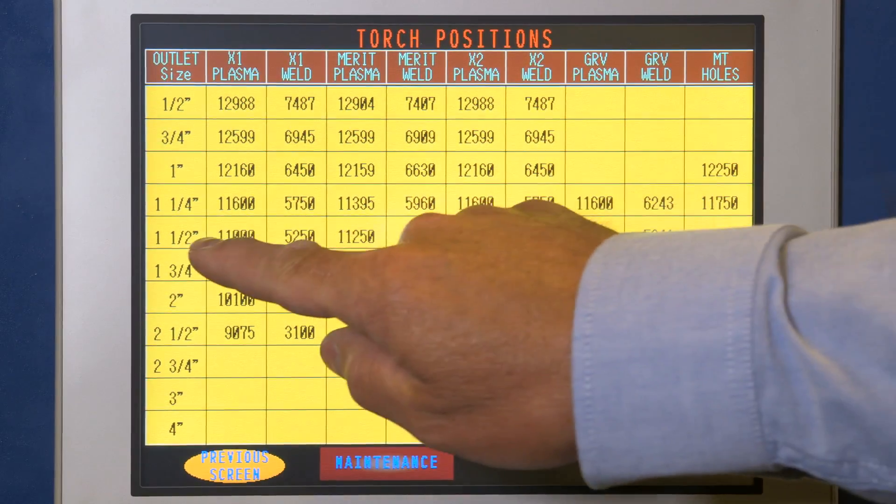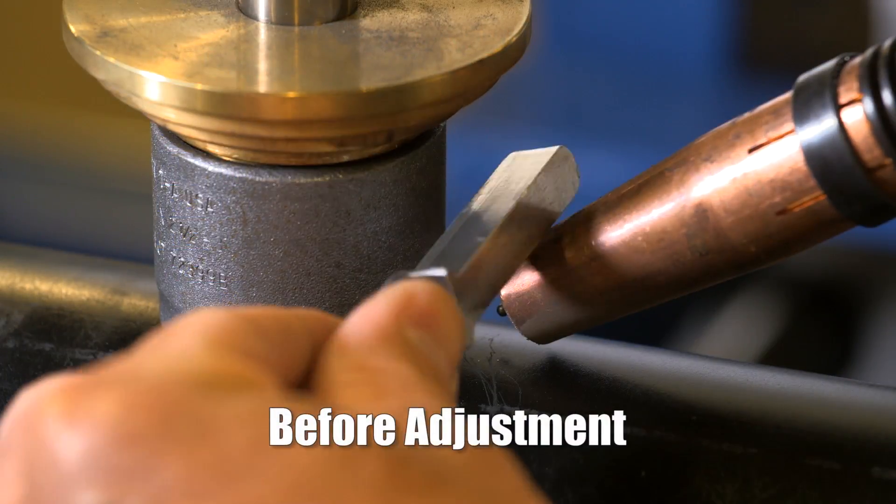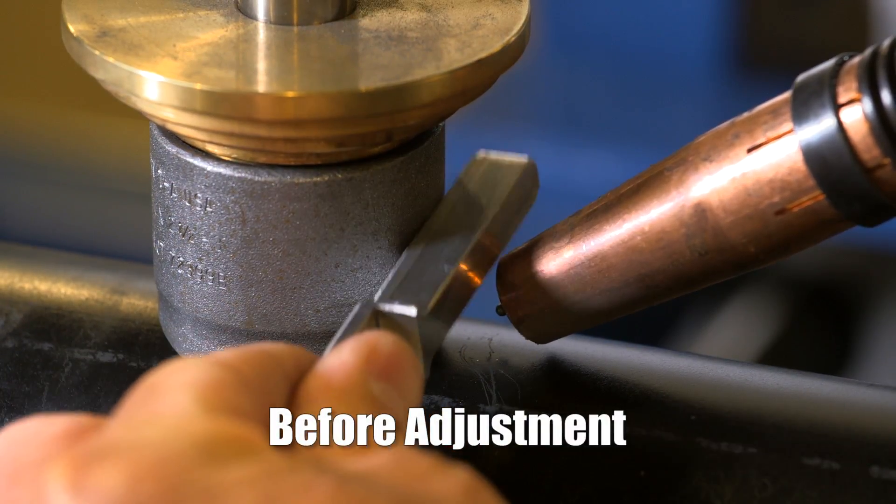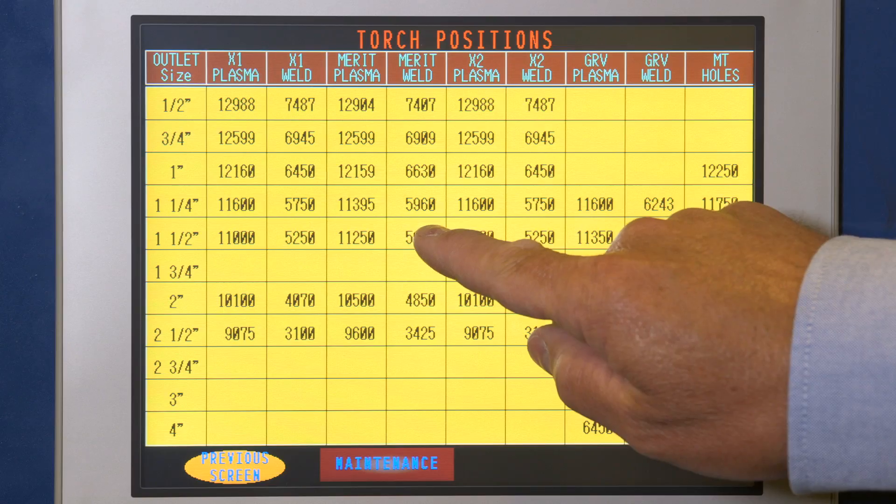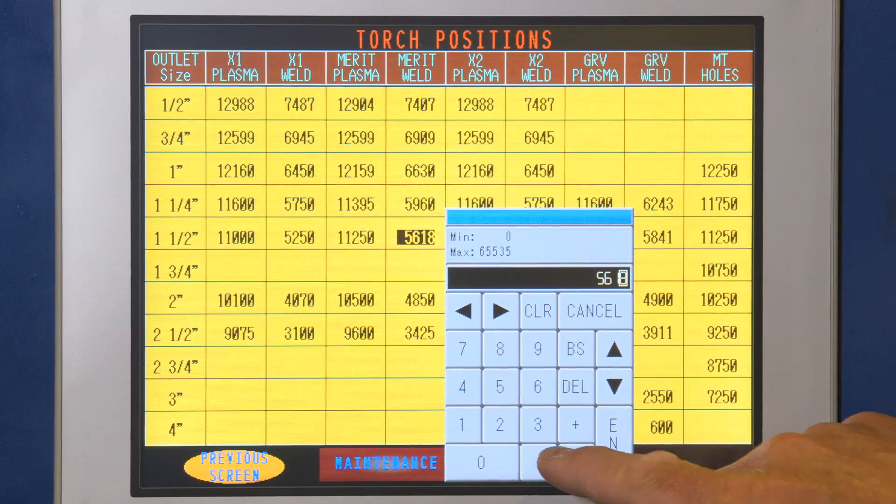Choose outlet size, determine adjustment needed. Please note one lead screw rotation equals 400 steps. 400 steps equal 1/8 inch.